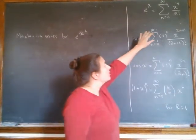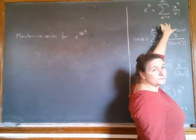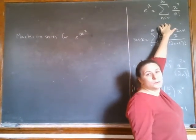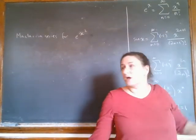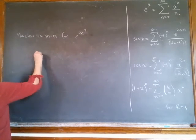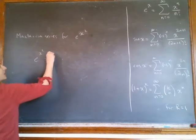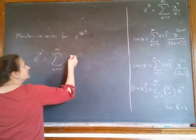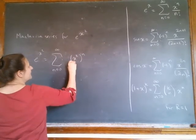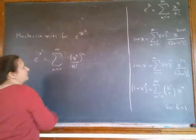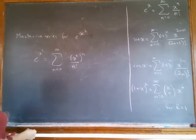But since we know what the Maclaurin series is for e to the x, which I wrote up here, all you need to do is shove an x squared in for x and you're done. Actually, we think that e to the x squared is sum from n equals 0 to infinity of x squared to the n over n factorial. Easy, right?